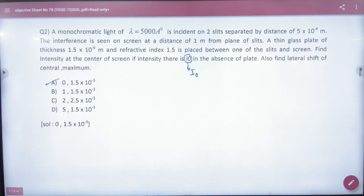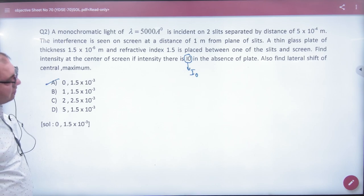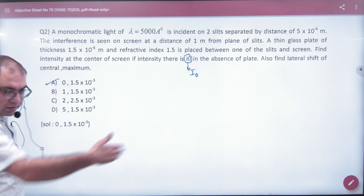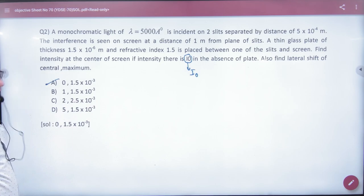Look at this question. Monochromatic light, λ given 5000, incident of two slits separated by distance of given small d. Interference is seen on the screen at a distance of 1 meter. D given. Thin glass plate of thickness and refractive index 1.5 is placed between one of the slit and the screen. So in one slit, I have put glass slab in one slit. So pattern shift.